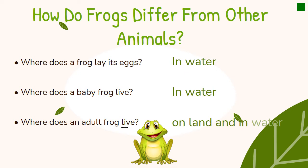Frogs start their lives as eggs laid in water. After a week or so they hatch and swim around eating tiny animals and other plants — that's why baby frogs live in water. An adult frog lives in water and on land.